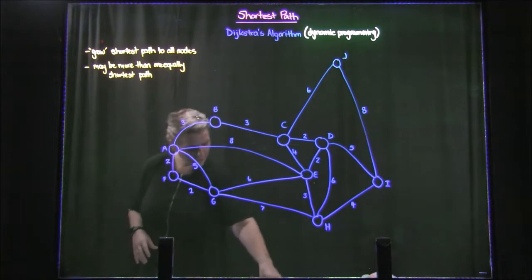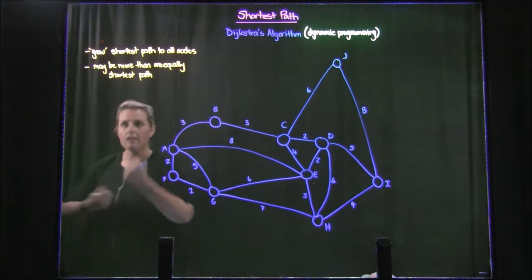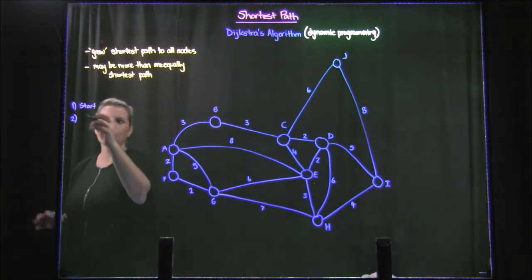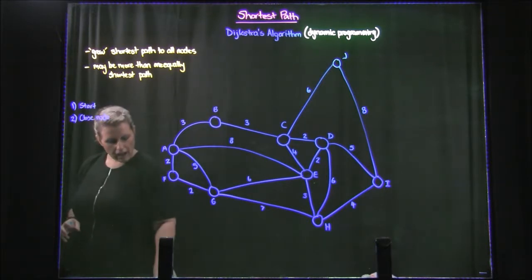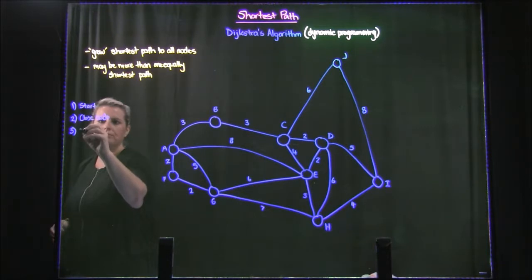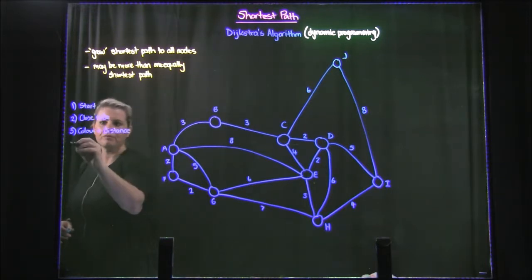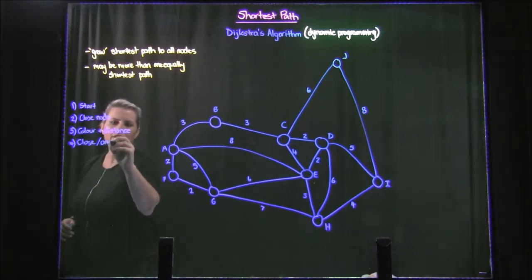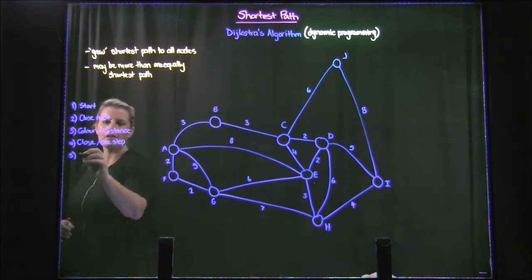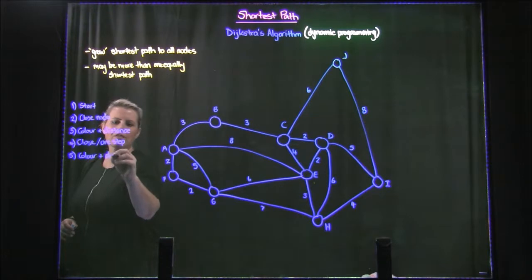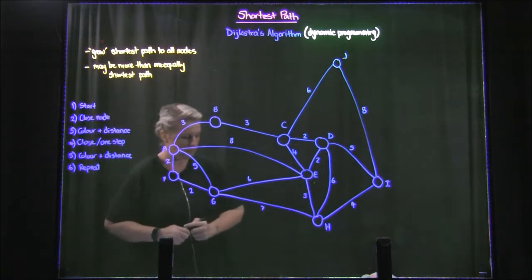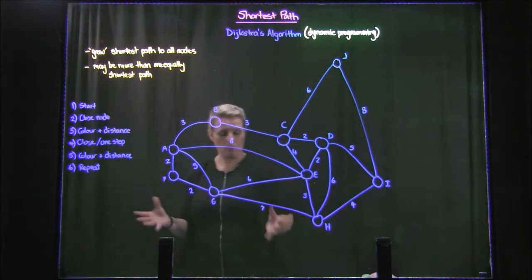Okay, now that you have those, let's do a quick summary down here. So first step is start node. We color that. The second step we're looking at finding the closest node. Then third step is coloring and writing the distance in the node. Next one is to find the next closest one step from colored. And then we again color the node and write the distance in the node. And we repeat until finished.